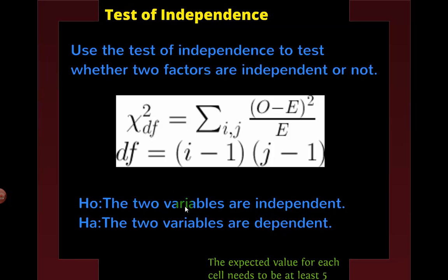Again, each cell needs to be at least 5. This test of independence is very similar to the goodness of fit one, since we had expected values and observed values, and it kind of fits into this. We could have used the same degrees of freedom formula as well. Are these independent of each other? You're going to see a contingency table — this could be a big table, like a 5 by 7 table, across all the different groups — and you're testing whether the pieces are independent of each other.